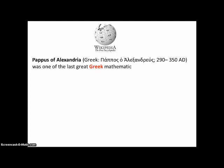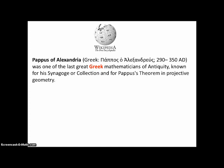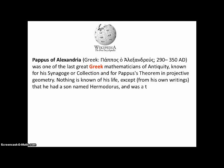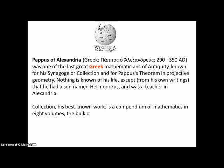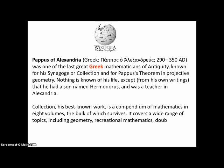You may be wondering who Pappus is. From Wikipedia: Pappus of Alexandria lived from 290 to 350 A.D. and was one of the last great Greek mathematicians of antiquity, known for his Synagoge, or Collection, and for Pappus' theorem in projective geometry. Nothing is known of his life except from his own writings. His best-known work is a compendium of mathematics in eight volumes covering geometry, recreational mathematics, doubling the cube, polygons, and polyhedra.